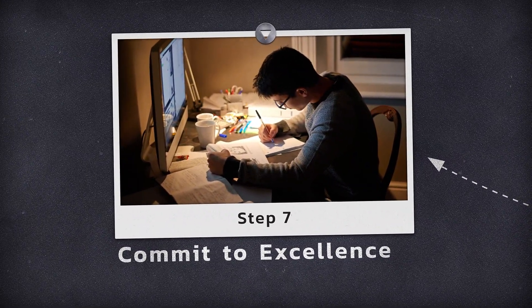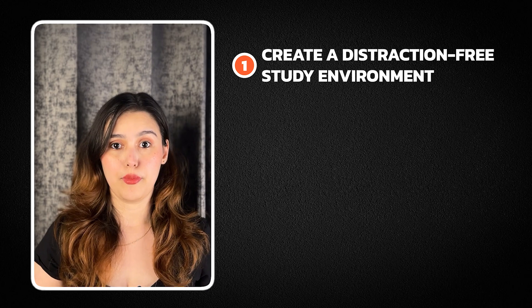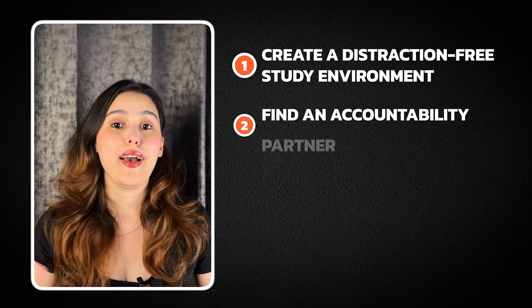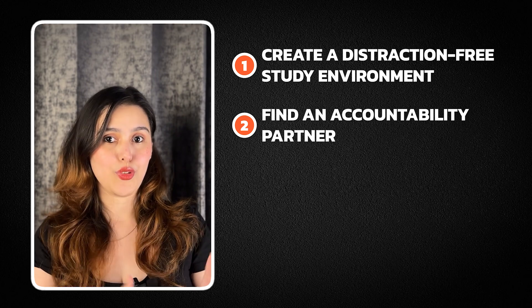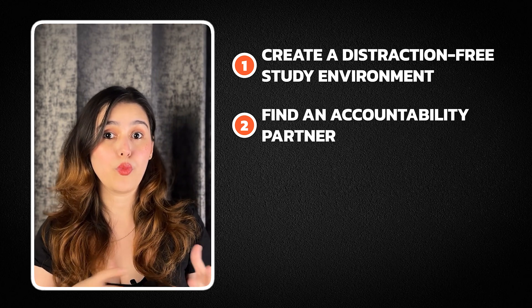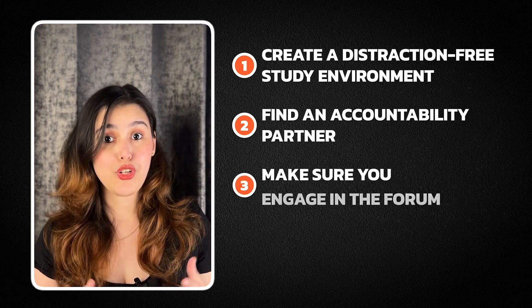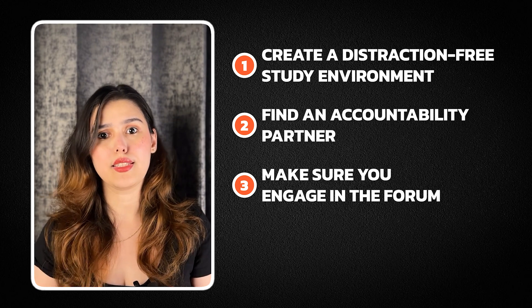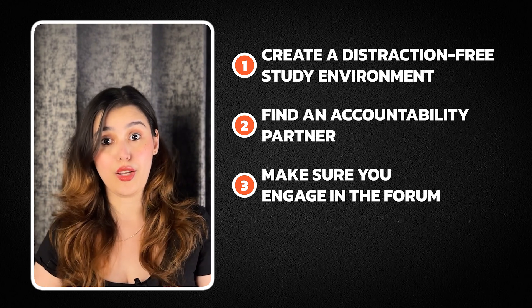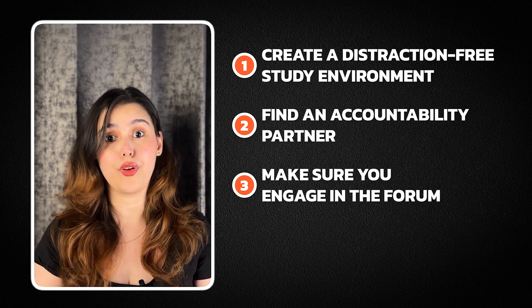Step 7: Commit to excellence. What can you do to improve your score? Maybe it's about creating your own notes, or perhaps not moving to the next chapter until you've mastered 90% of the questions, or adjusting your schedule to study at your peak performance time. Here are some ideas to elevate your prep: create a distraction-free study environment — your GMAT prep deserves your full attention. Find an accountability partner by going to the link in the description, signing up, and filling out a form. We'll link you with a study buddy based on where you live. Make sure you engage in the forum, do some practice, or complete quizzes — because you get points you can use to get free courses, consultation sessions, and resources worth hundreds of dollars.